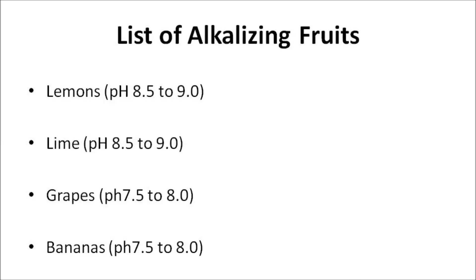Here is a list of alkalizing fruits. Lemons are highly alkaline-forming, with a pH of 8.5 to 9.0, and are an excellent remedy against colds, coughs, sore throats, heartburn, and gastro-upsets. Limes are also extremely alkaline-forming foods with a pH level of 8.5 to 9.0, and they purify the kidneys. Grapes are a very low alkaline-forming food with a moderate alkaline pH level of 7.5 to 8.0, and they also elevate acid food in the alkaline direction.